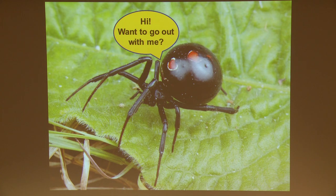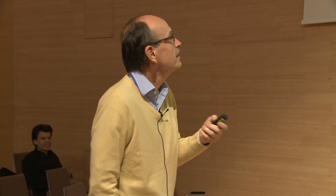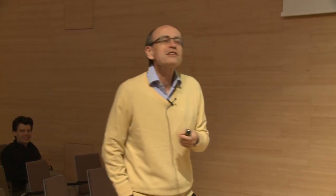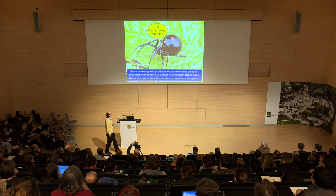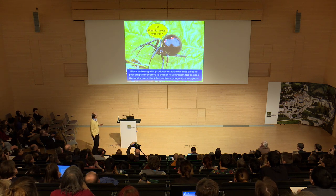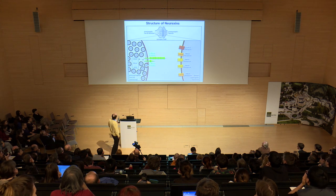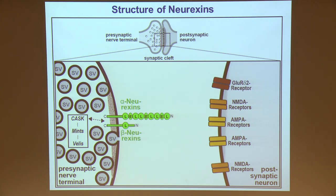Neurexins were the first such trans-synaptic cell adhesion molecules discovered. They were identified in work on the black widow spider — well-known, especially for its mate; some experiences are so good they only happen once. The black widow spider makes a toxin called alpha-latrotoxin, which binds to presynaptic terminals, excites them, and elicits massive neurotransmitter release. Neurexins were identified and cloned as the presynaptic receptors for this toxin. They look like typical cell surface proteins — receptors or cell adhesion molecules.